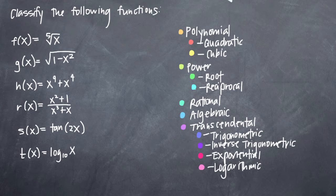When we're classifying functions, we want to be as specific as we can. For example, if we can, it would be better to say that a function is a trigonometric function as opposed to just being able to identify it as a transcendental function.